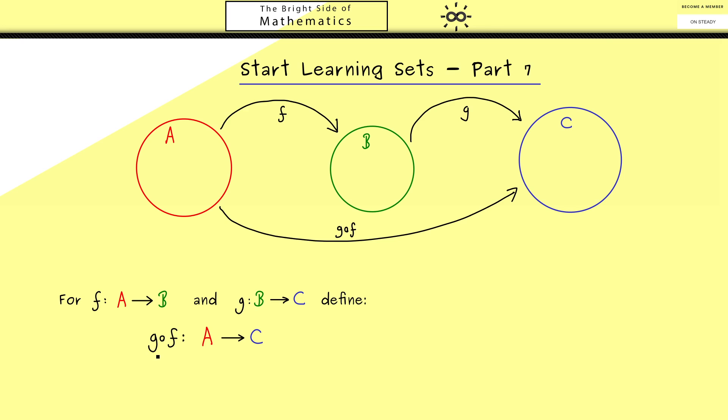And then we can define the new map g circle f from A into C. A better way to read this would be g composed with f or just g after f.